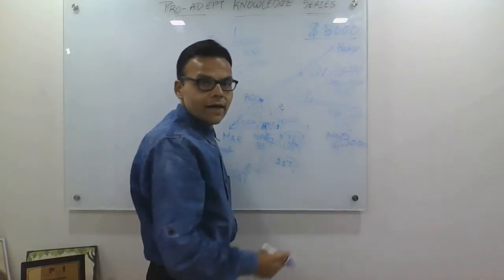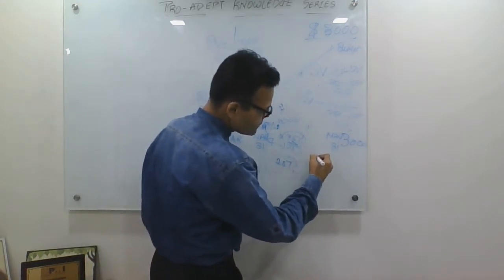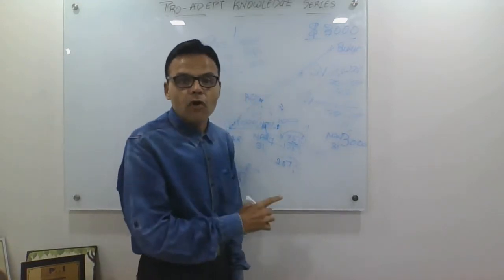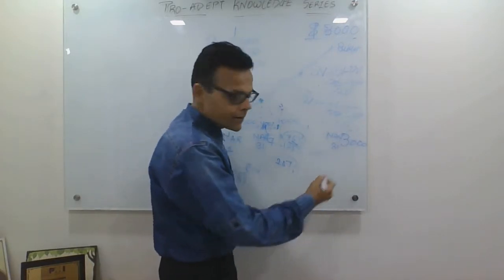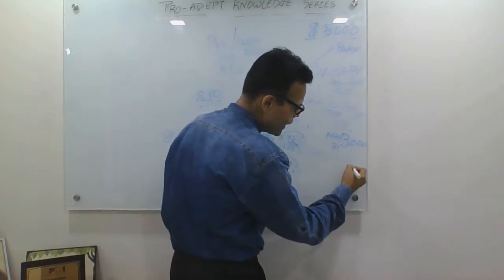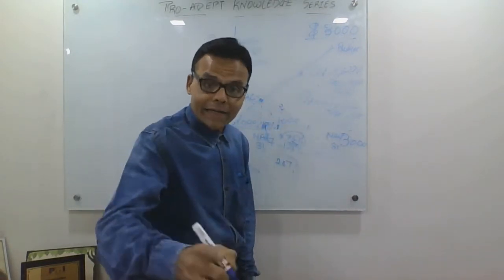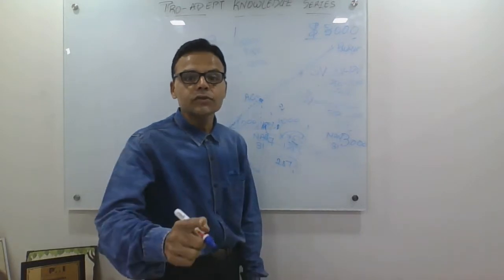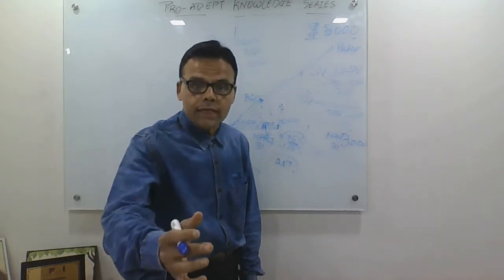So when I talk about relative measure, I always talk about something called Schedule Performance Index, which is nothing but earned value divided by plan value, which will give you a comparative measure in terms of how you are doing in your project on schedule.